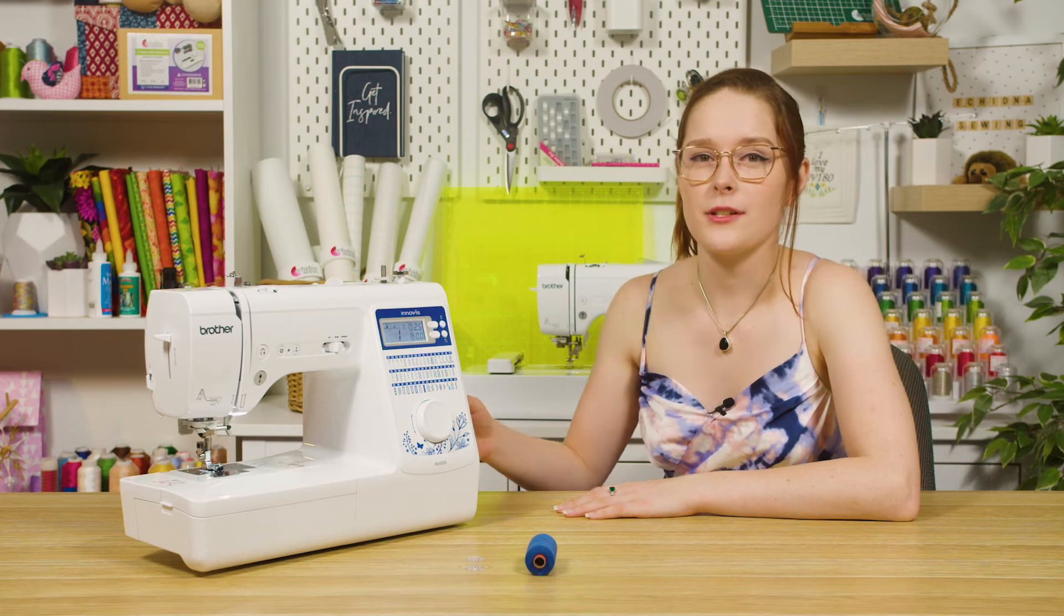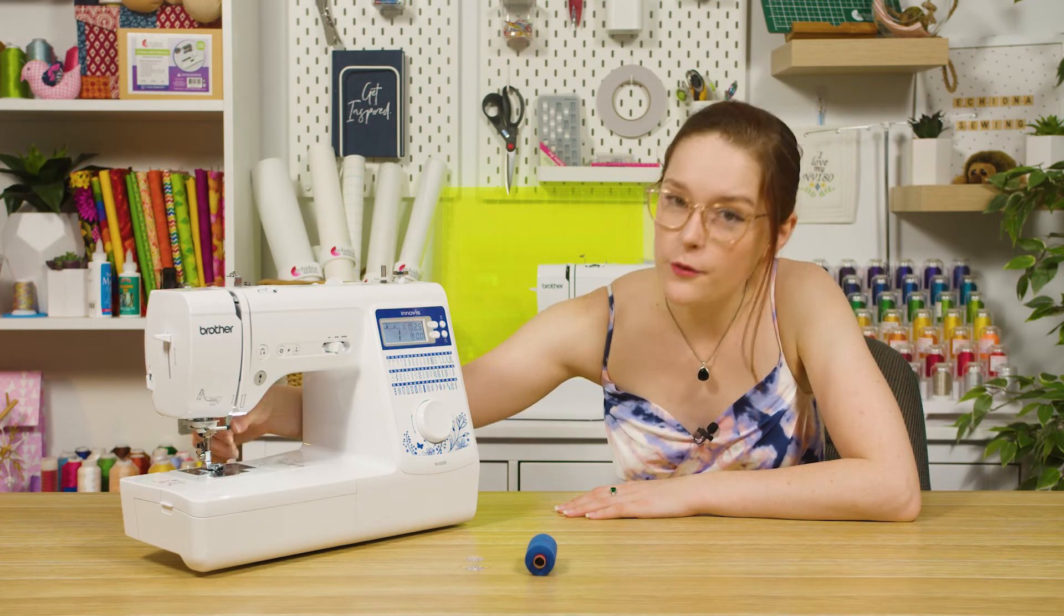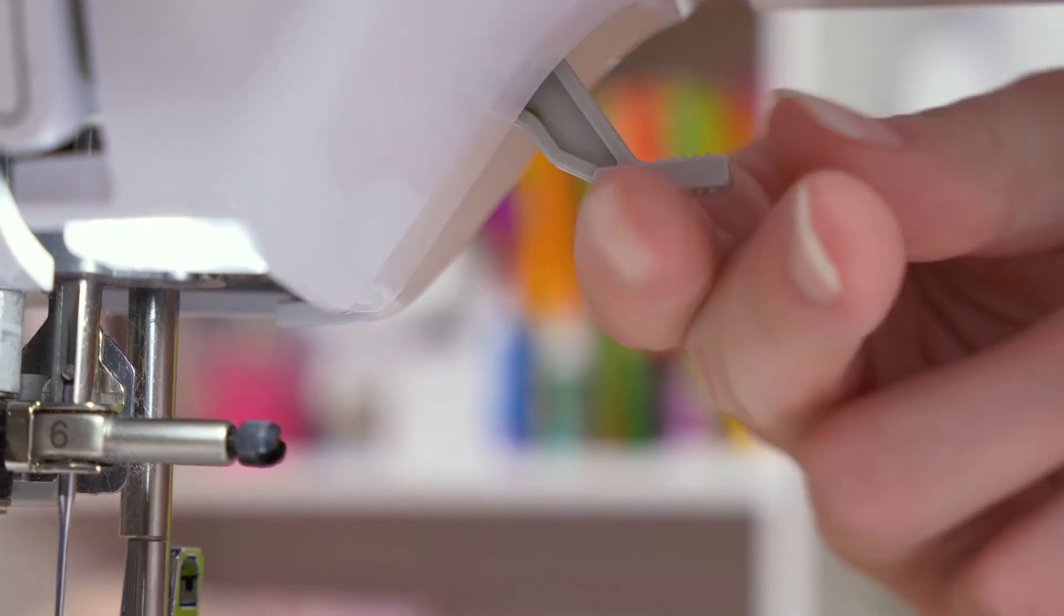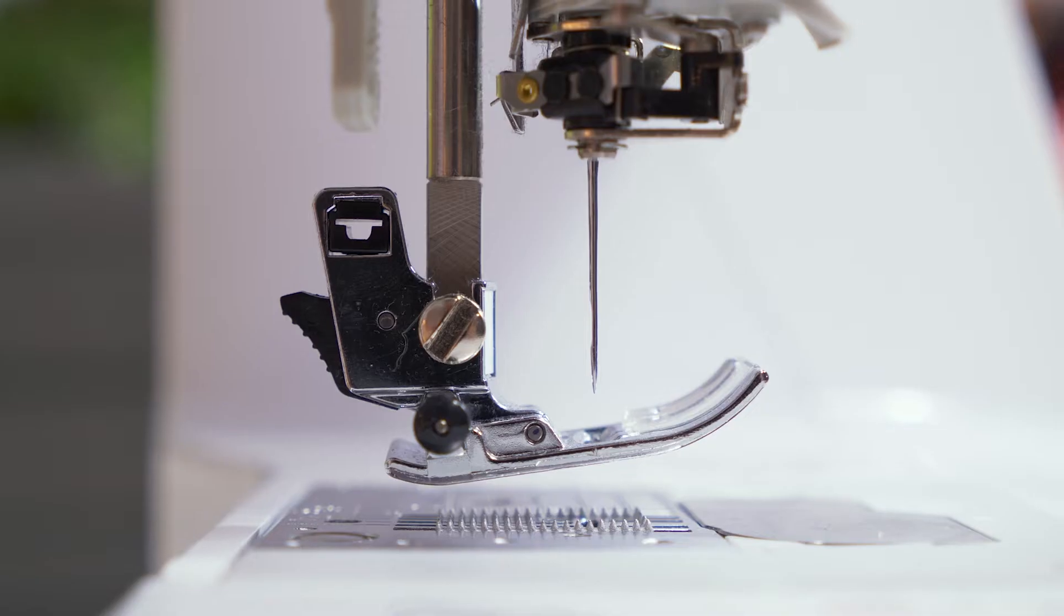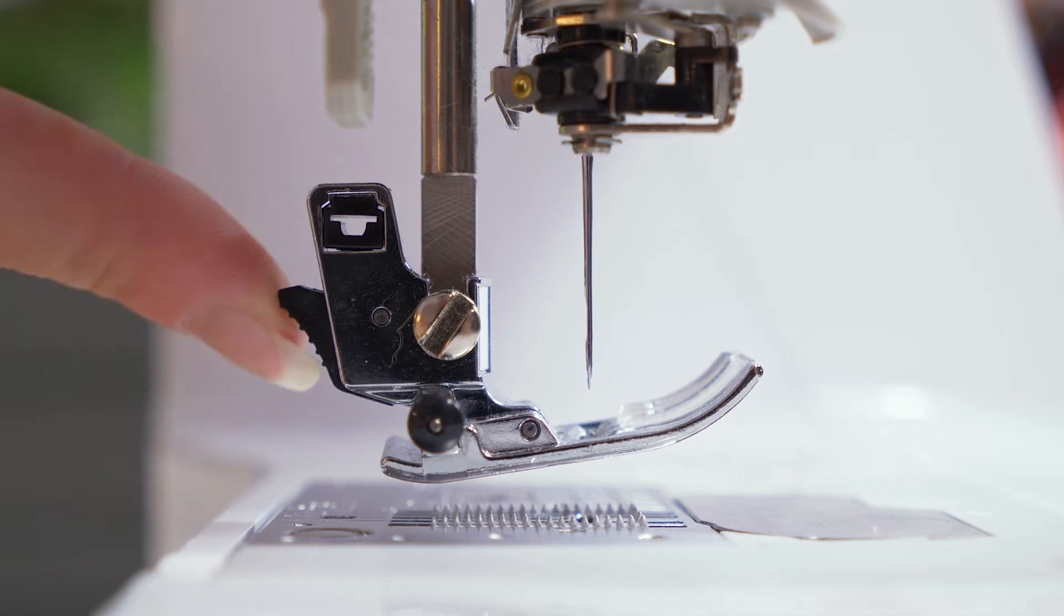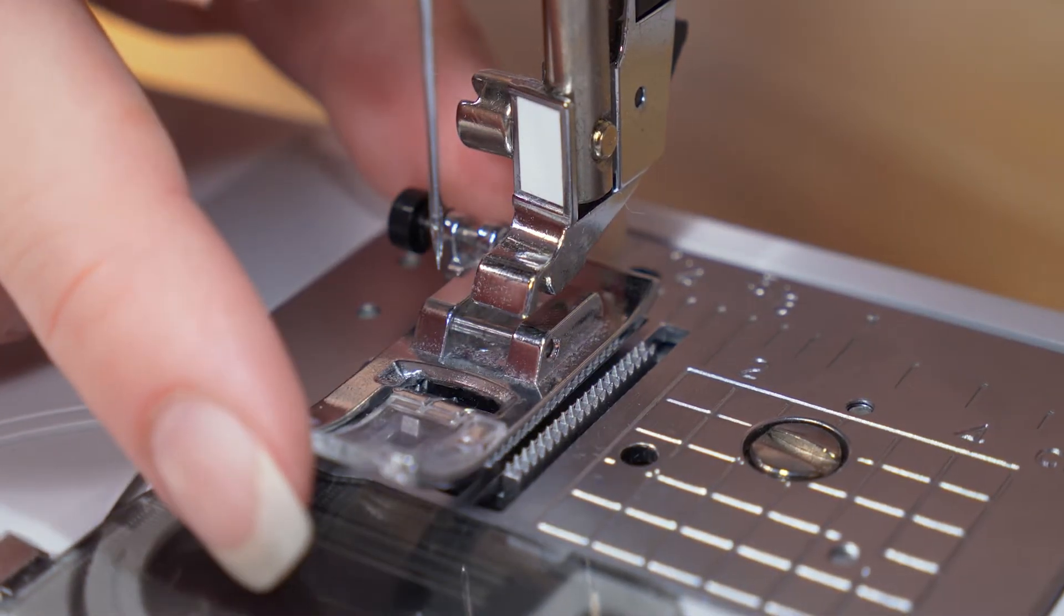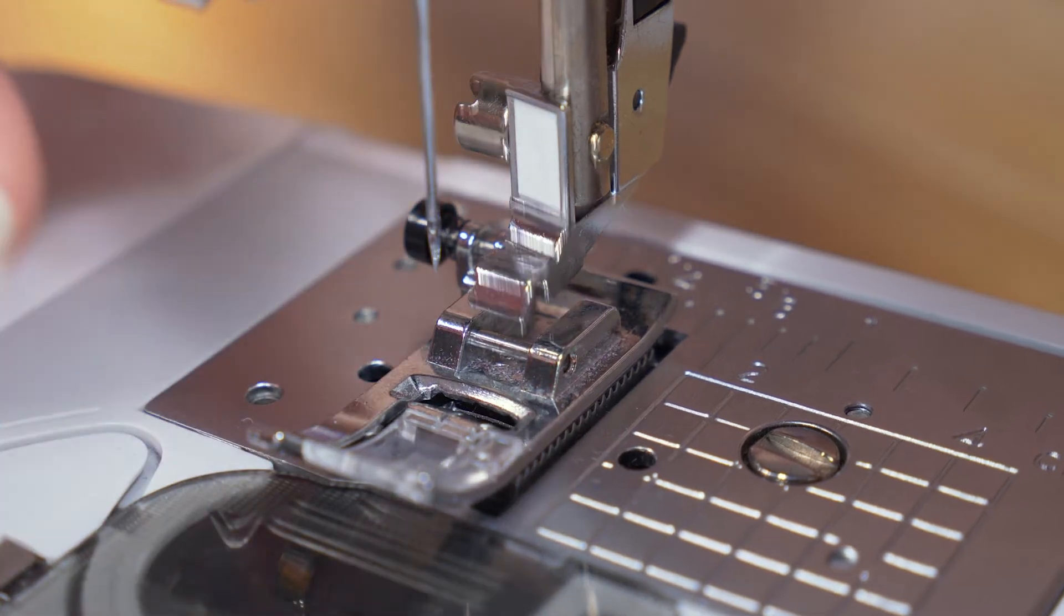If you want to change your foot, you need to make sure that your presser foot is up—the handle is located behind your presser foot. Then press the black button on the back of the presser foot holder to release the current foot. Position the new foot underneath and lower the presser foot so the new foot snaps into place.